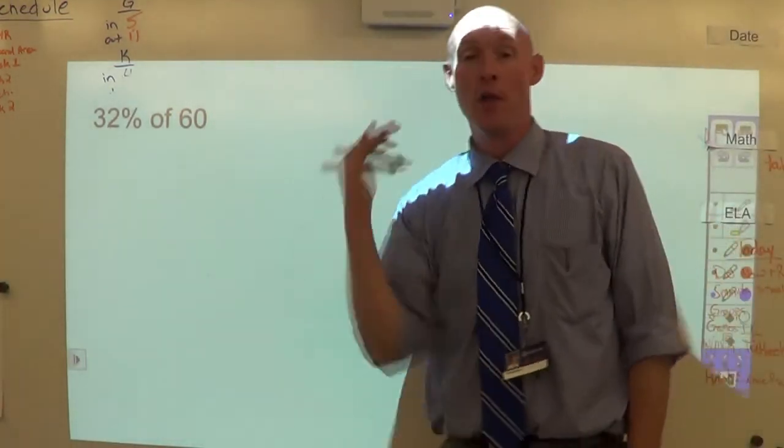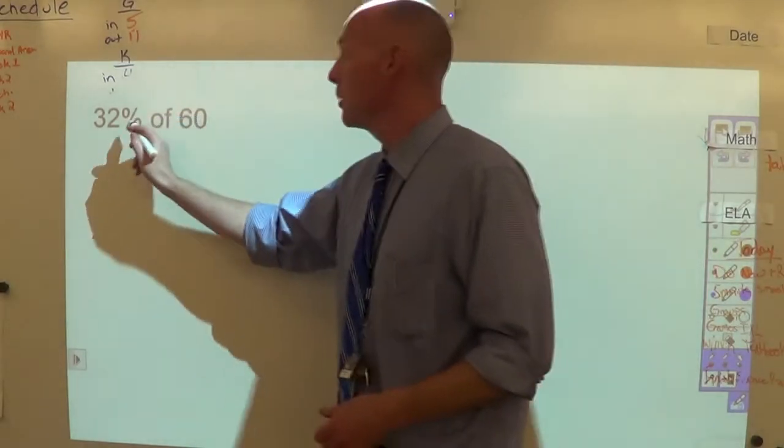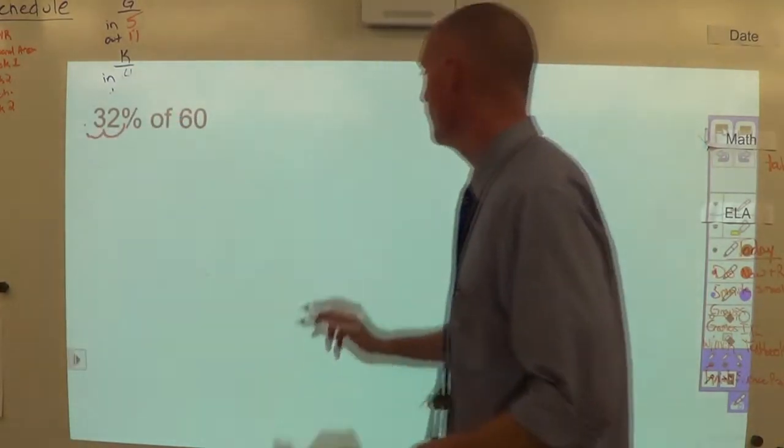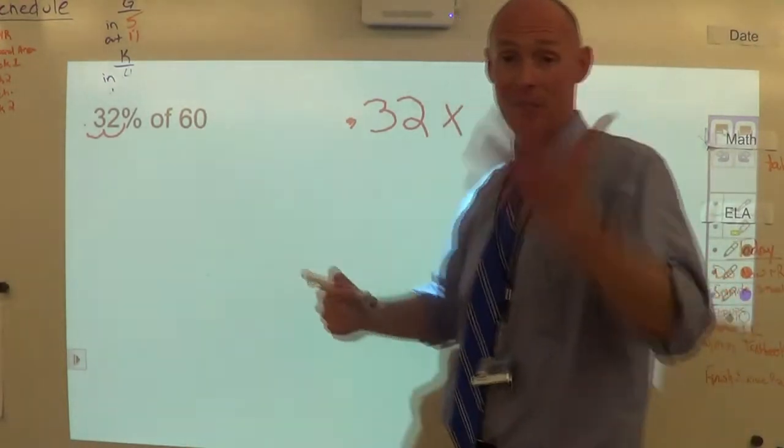This one here, what is thirty two percent of sixty? Well let's work it out. Thirty two percent we're going to change to a decimal to be decimal 0.32. The word 'of' changes to multiplication and then sixty is just straight up sixty.